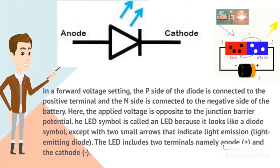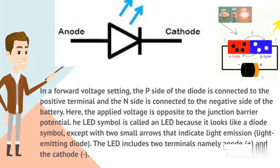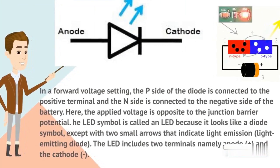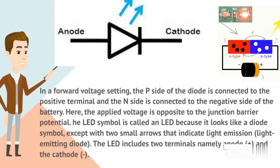In a forward voltage setting, the p-side of a diode is connected to the positive terminal and the n-side is connected to the negative terminal of the battery. Here the applied voltage is opposite to the junction barrier potential.